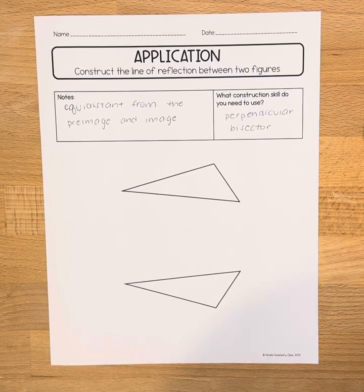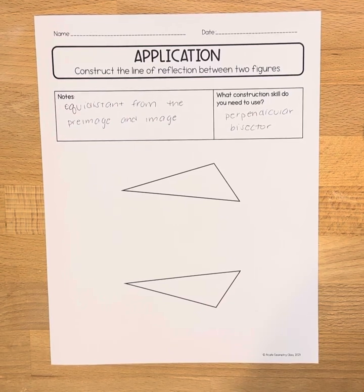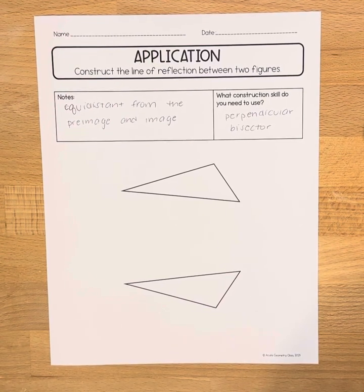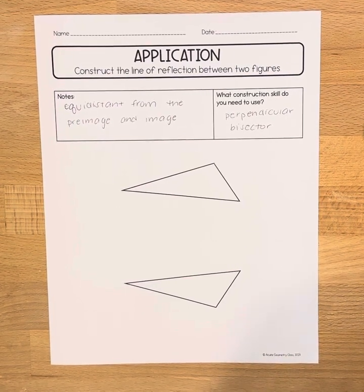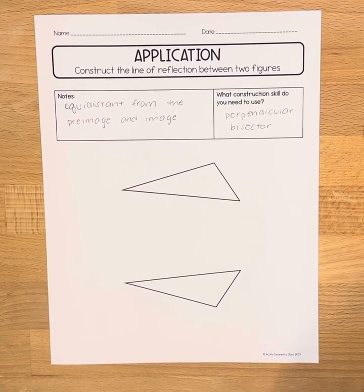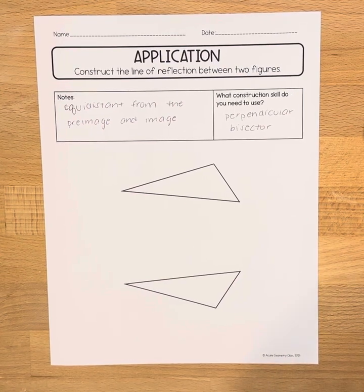Okay, our construction in this video is how to construct the line of reflection between two figures. Note that a line of reflection is equidistant from the pre-image and image, and the construction skill we need to use is perpendicular bisector. So this construction is considered to be an application of the perpendicular bisector construction.